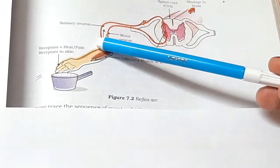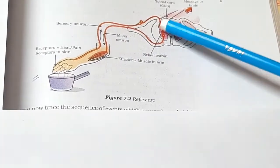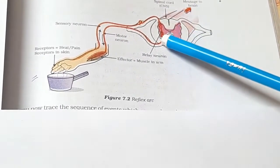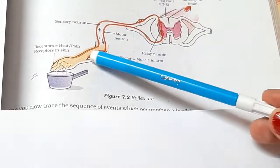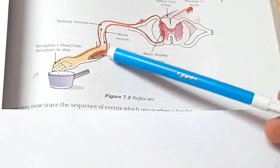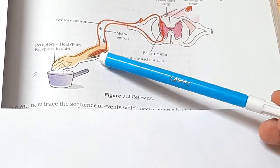So here is the sensory neuron through the spinal cord and then to the brain. And then you can see this is the motor neuron. The motor neuron carries the message to the effector. The effector is the muscle of the arm. And what is the response?